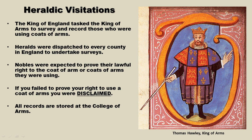Near the end of the Middle Ages, there were rampant problems with coats of arms — widespread abuse, with some individuals using emblems for which they had no rights. Thus, the King of England tasked the King of Arms to survey and record those who were using coats of arms. These individuals would have their pedigrees and genealogy examined very carefully, and any irregularities would be corrected. The heralds were dispatched to every county in England to undertake these surveys, which became known as the heraldic visitations. These visitations primarily took place from 1530 to 1688.